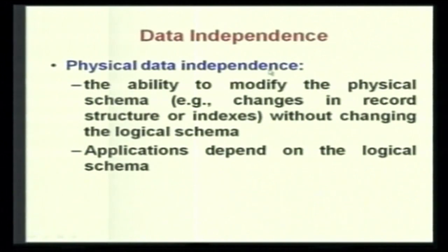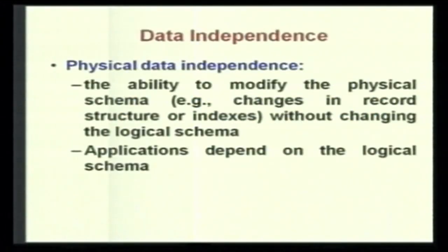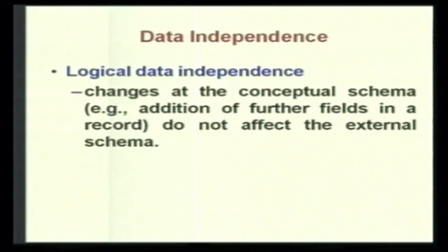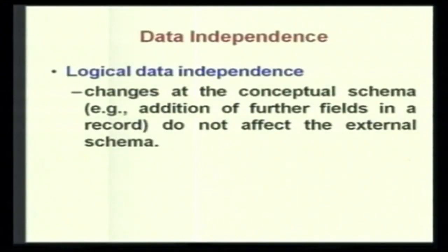There are different types of data independence. Physical data independence is the ability to modify the physical schema — changes in record structure and indexes — without changing the logical schema, since applications depend on the logical schema. Logical data independence is the independence between the logical level and the view level: changes of the conceptual schema, such as the addition of further fields, should not affect applications and views already running.